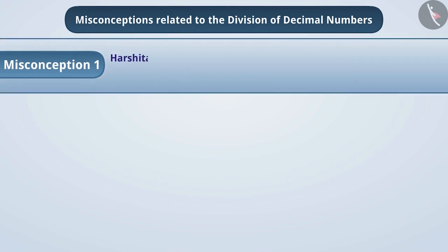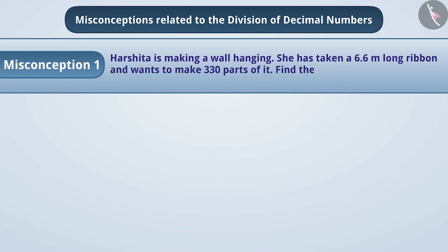Misconception 1. Harshita is making a wall hanging. She has taken a 6.6 meter long ribbon and she wants to make 330 parts of it. What would be the length of each piece?